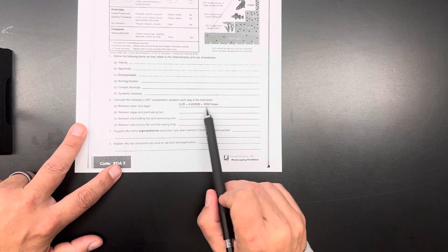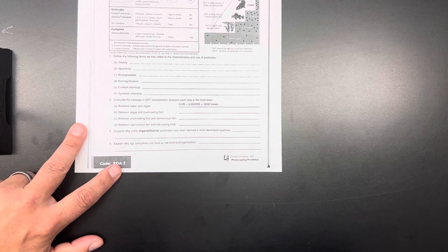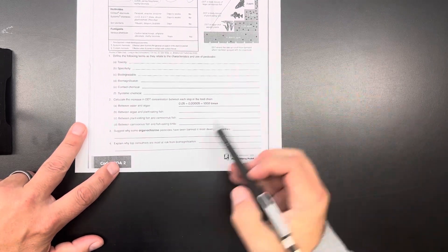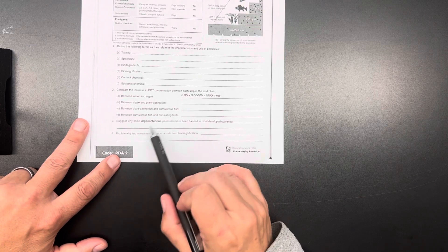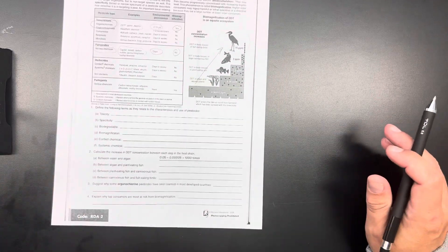You're just dividing one number by another to get how many times more concentrated it is. And we discussed both of these. So you should be able to answer those. All right. Thank you very much.